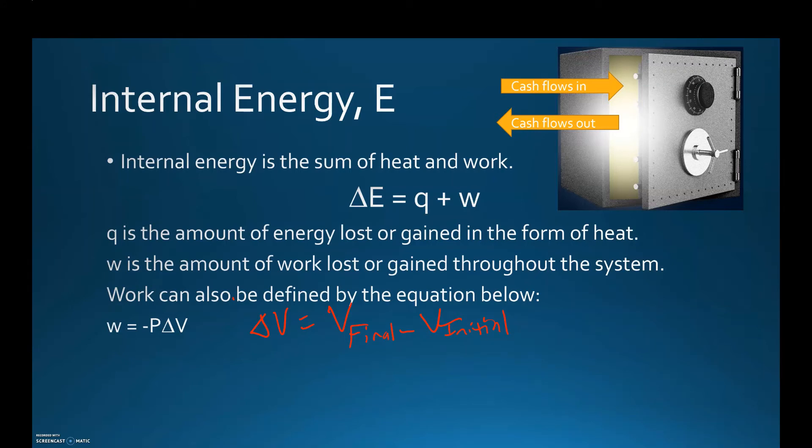Work can also be defined by the equation w = -PΔV, where P stands for pressure. Notice this negative sign here - it's going to alter the sign of whatever happens to the volume in that container. So you can calculate work if you know the pressure and the change in volume.